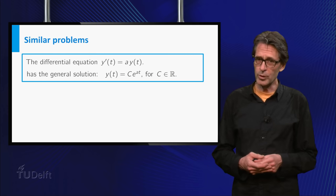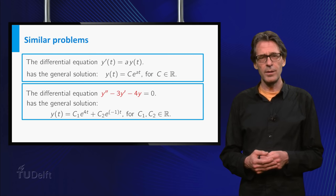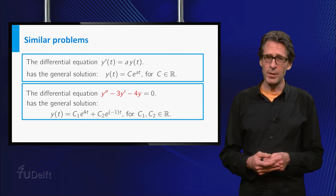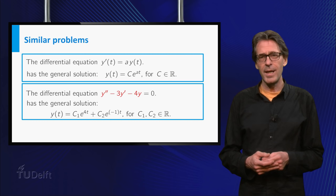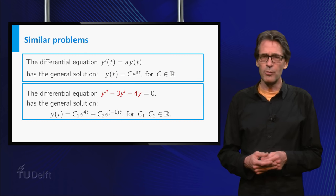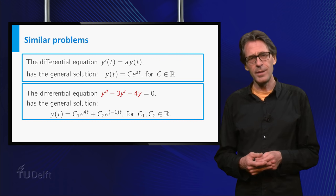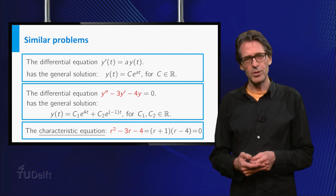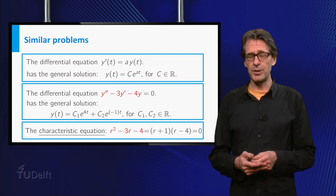And you have also seen that the second order linear differential equation y'' minus 3y' minus 4y equals zero has as general solution an arbitrary linear combination of e to the power 4t and e to the power minus t. Recall that the two coefficients minus 1 and 4 are the solutions of the characteristic equation.